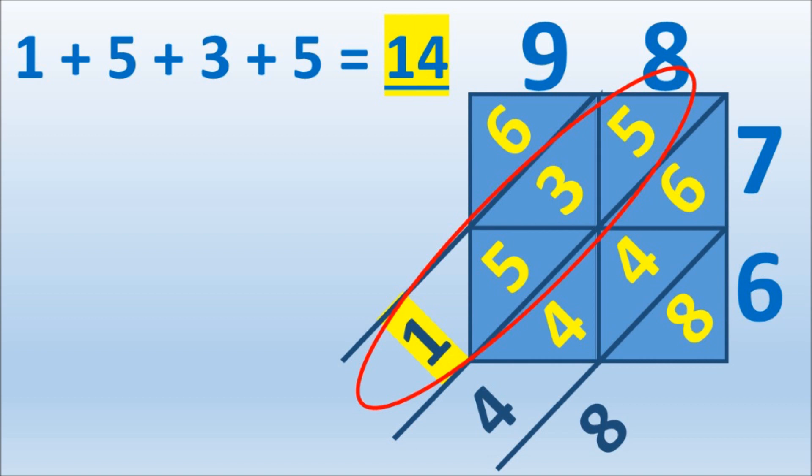Now add 1 plus 5 plus 3 plus 5 is 14. Replace the 1 on that line with a 4 from 14 and place the 1 on the line above.